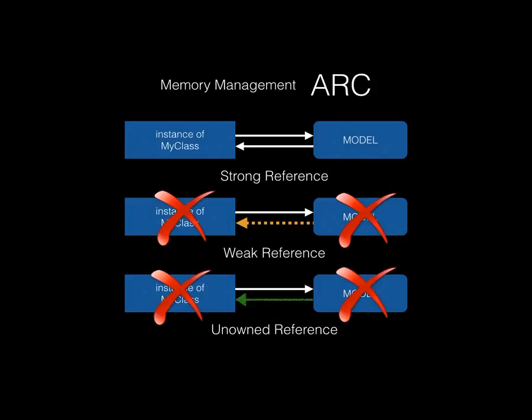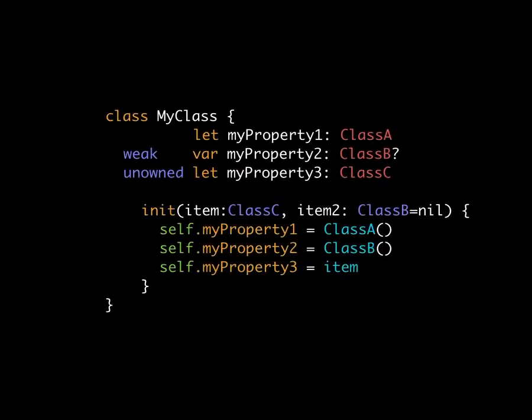In code, you prefix properties with `weak` or `unowned` — strong references are the assumed norm. A strong reference can be declared as `let`, but a weak reference must be a `var` because it has to mutate between nil and a value throughout its lifespan. All weak references must also be an optional.